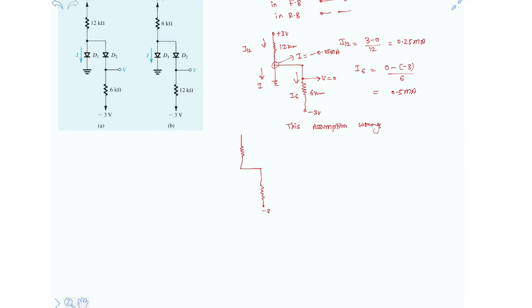So let's make it plus 3V, minus 3V, as usual 12kΩ resistor, here is 6kΩ resistor. This is the voltage V and here is clearly open circuit.